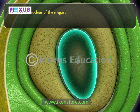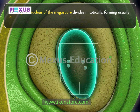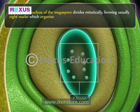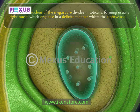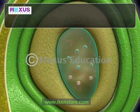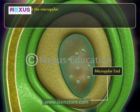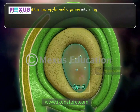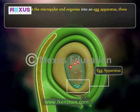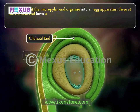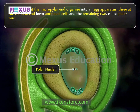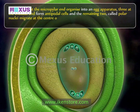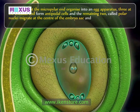The functional megaspore is the mother cell of the female gametophyte. It grows in size and forms an embryo sac. The haploid nucleus of the megaspore divides mitotically, usually forming around eight nuclei, which organize in a definite manner within the embryo sac. Three nuclei at the micropylar end organize into an egg apparatus, and three at the chalazal end form antipodal cells.